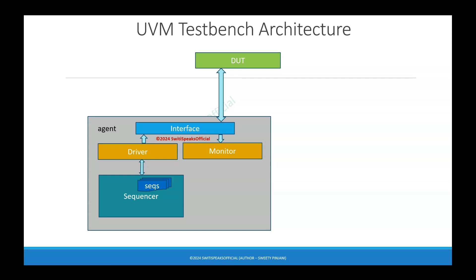We are forming the test bench architecture step by step, which is an easy way to understand it. First we constructed the DUT, then it was connected to the interface, then the driver drives inputs to the DUT, the driver gets input from the sequencer which has sequences, the DUT generates some output, and those outputs are monitored by the monitor. All the components required to communicate to the DUT are present inside something called the agent.